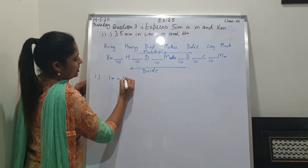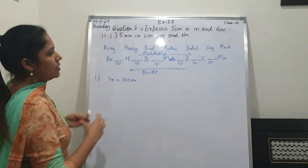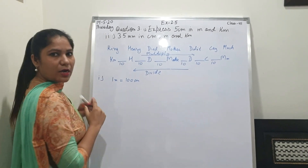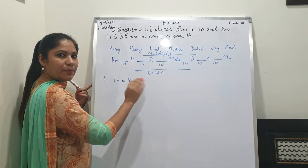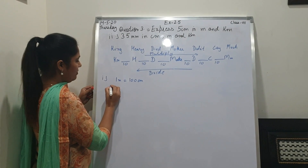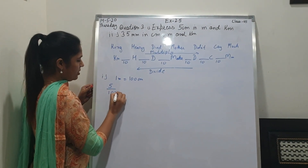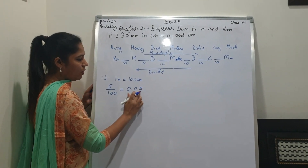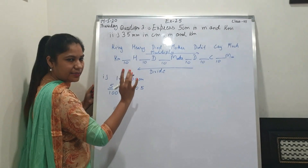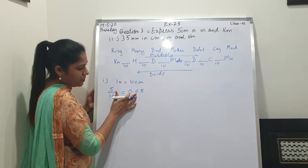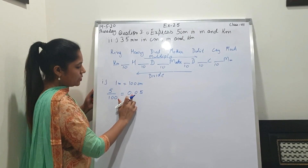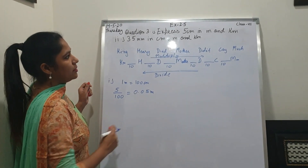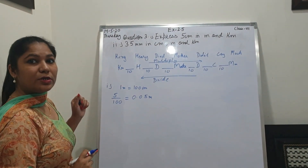Now we have to convert into kilometer also. From centimeter to kilometer — right to left — we divide. How many zeros between them? One, two, three, four, five — five zeros. So 1 kilometer equals 100000 centimeter — that is why five zeros. We need five decimal places; one digit is already there, so we need four zeros. After the point: one, two, three, four, five. So 5 centimeter equals 0.00005 kilometer. Now this is our first part.